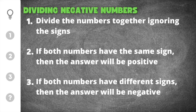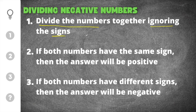There are three important things that we need to remember for dividing negative numbers. The first thing we need to know is that you're going to divide the numbers together, ignoring the signs. It doesn't matter if the numbers are positive or negative — the first thing you're going to do is divide them as if they were both positive.